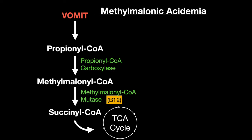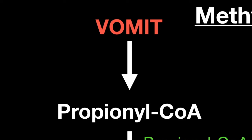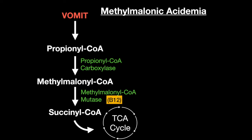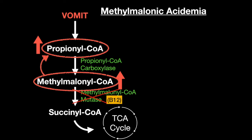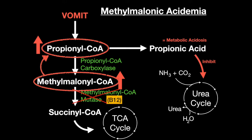Methylmalonic acidemia is very similar. The same valine, odd-chain fatty acids, methionine, isoleucine, and threonine are metabolized to propionyl-CoA. Propionyl-CoA is turned into methylmalonyl-CoA. However, methylmalonyl-CoA mutase is deficient, and therefore cannot become succinyl-CoA. Methylmalonyl-CoA turns back into propionyl-CoA and eventually into propionic acid, causing the same acidosis and hyperammonemia.